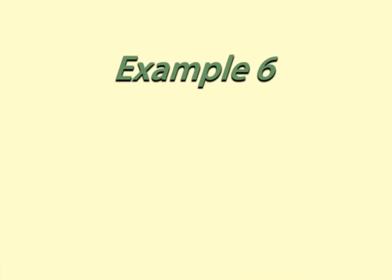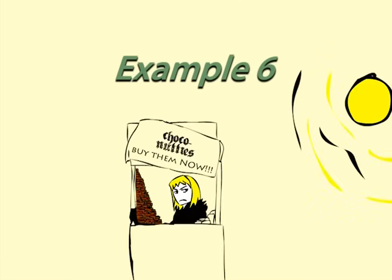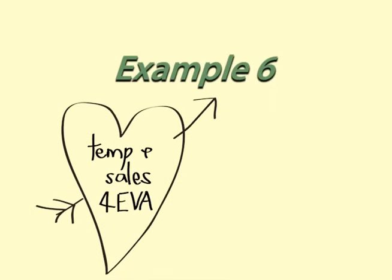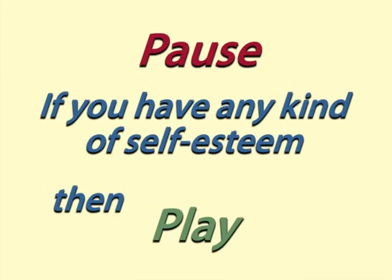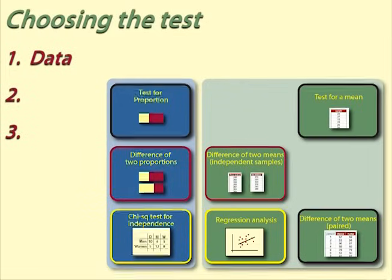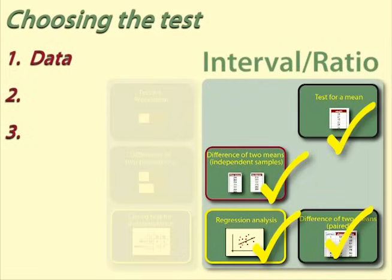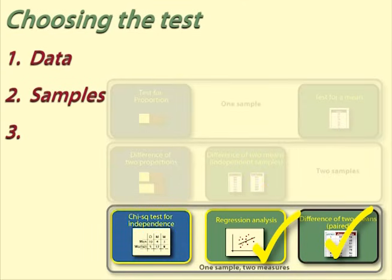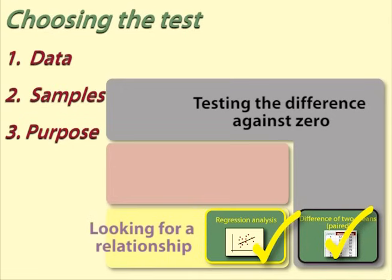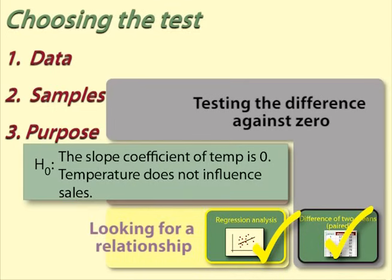Example 6: Are sales affected by temperature? Helen wants to see if there is a relationship between the daily temperature and sales of choconutties. She has data on sales and temperature for 30 weekdays of sales. Data: sales and temperature are both interval variables. Samples: one sample of 30 days with two measures or scores for each day. Purpose: Helen is interested in the relationship between sales and temperature. This leads us to decide that the test is regression.